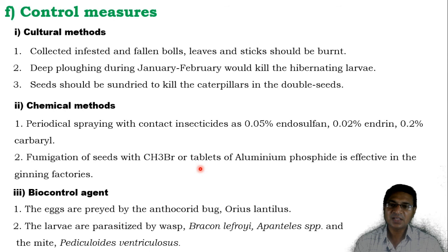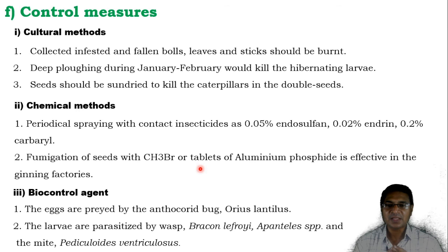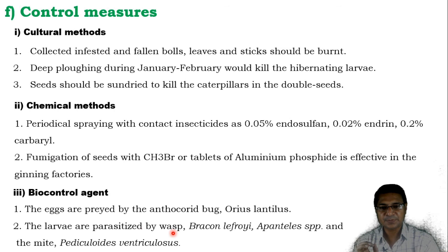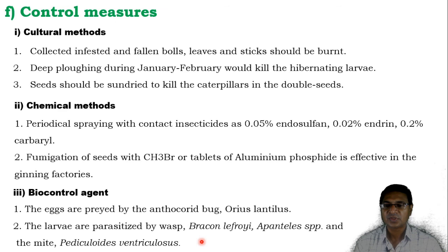The third method is biocontrol or biological control. The eggs are preyed upon by anthocorid bugs, named Orius lentilus — if implanted in the infected area, this bug feeds on the eggs of the pest. The larvae are parasitized by a wasp named Bracon lefroyi, a Pentalitomastix species, and the mite Pediculoides ventricosus, which are effective to control the larval forms of the pest.